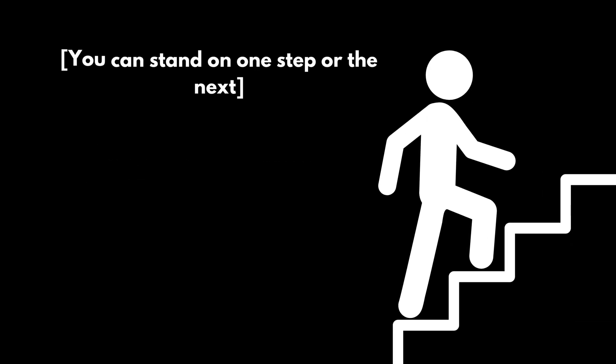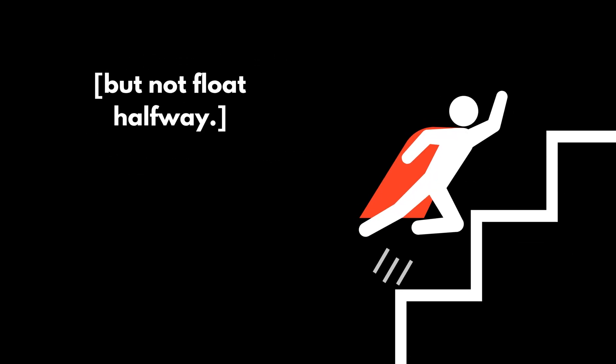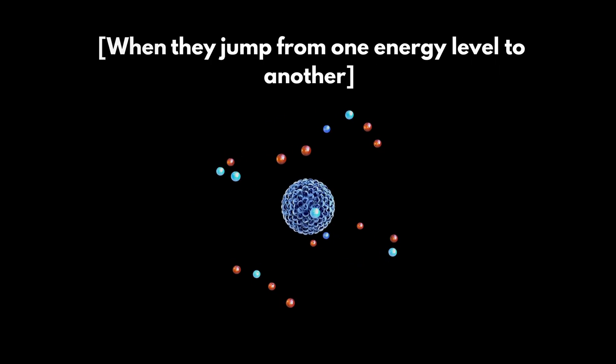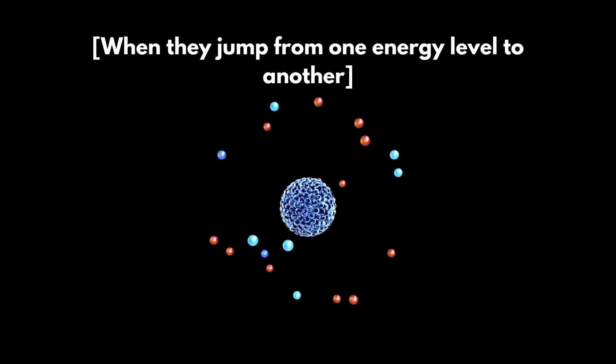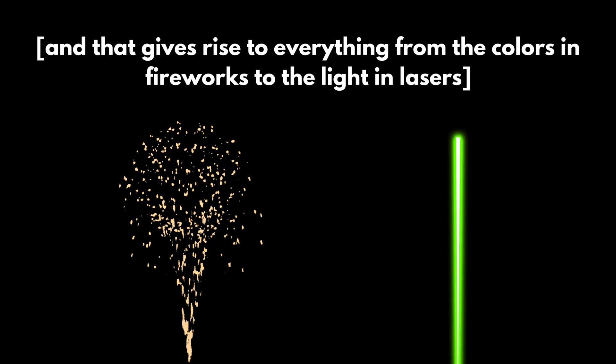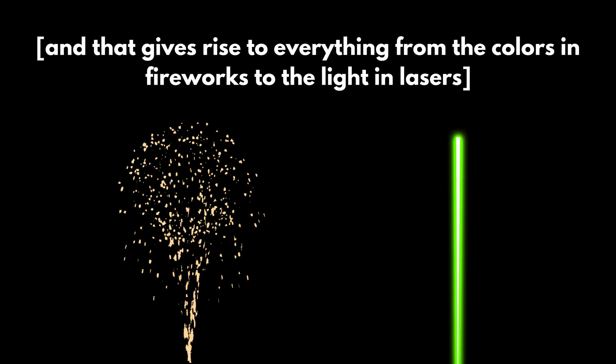Imagine a staircase. You can stand on one step or the next, but not float halfway. That's how electrons behave in atoms. When they jump from one energy level to another, they absorb or emit energy in exact amounts. And that gives rise to everything from the colors in fireworks to the light in lasers.